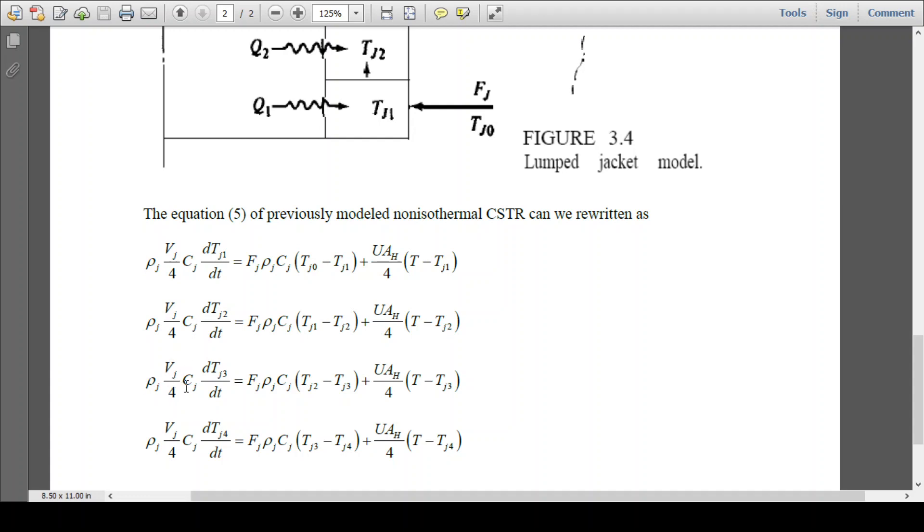Same way we can write for third lump. So ρj Vj/4 cj dtj3/dt equal to fjρjcj tj2 minus tj3 plus UAh/4 T minus tj3. So this segment has the inlet temperature is tj2, outlet temperature is tj3. And the well mixed temperature of this zone is tj3.